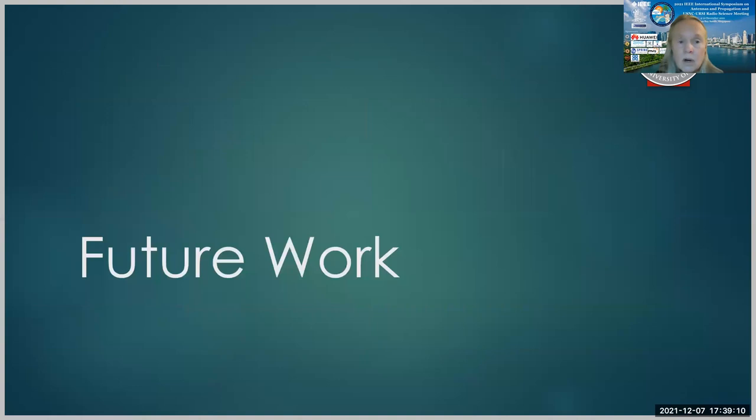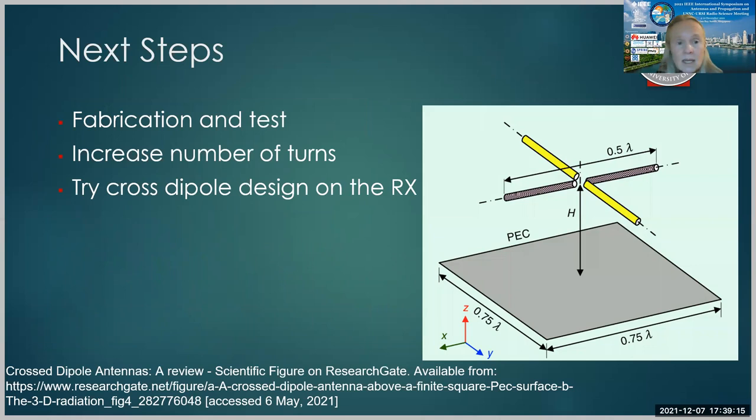So in future work, we expect to fabricate and test this device, increase the number of turns in the coils, and also try a cross-type coil design for our receive system. In addition, we will be better matching the antennas. And in the case of the loops, we will have to probably do a different type of antenna to improve the polarization match.